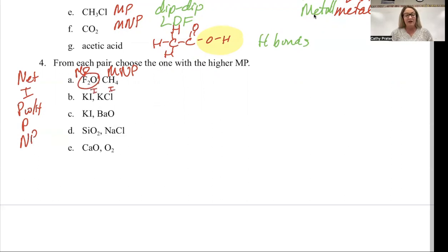For B, I have two ionics. When I'm comparing two ionics to each other, the first thing I look at is the charge of the ions. We're dealing with Coulomb's force here. Plus one, minus one, plus one, minus one.